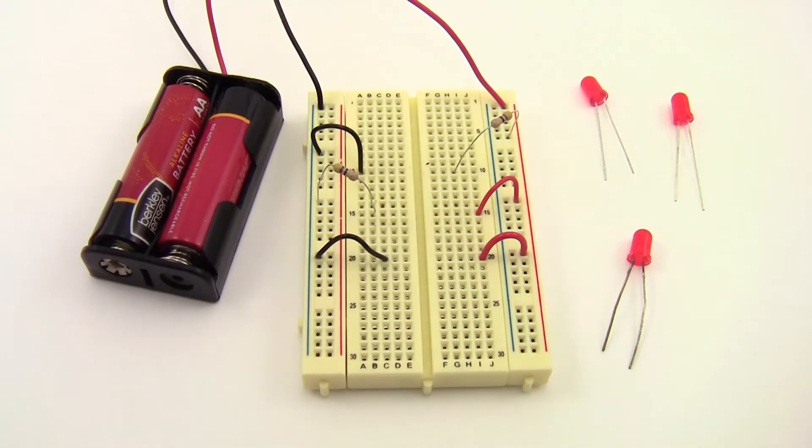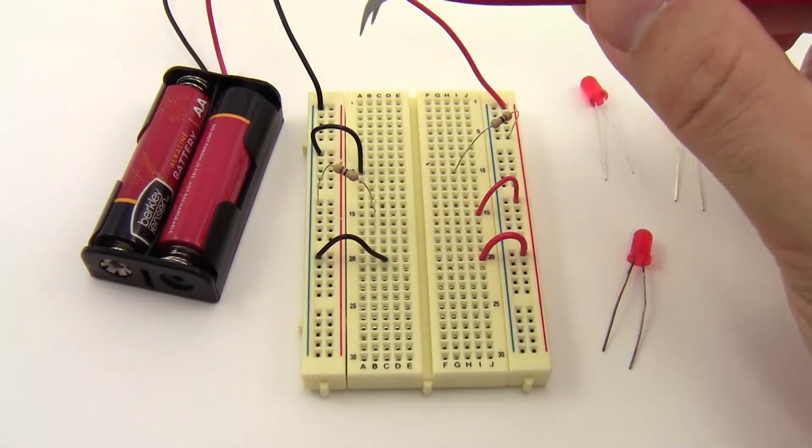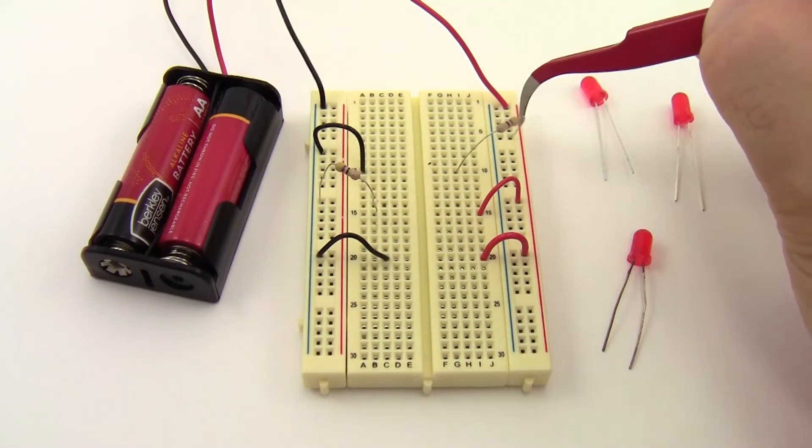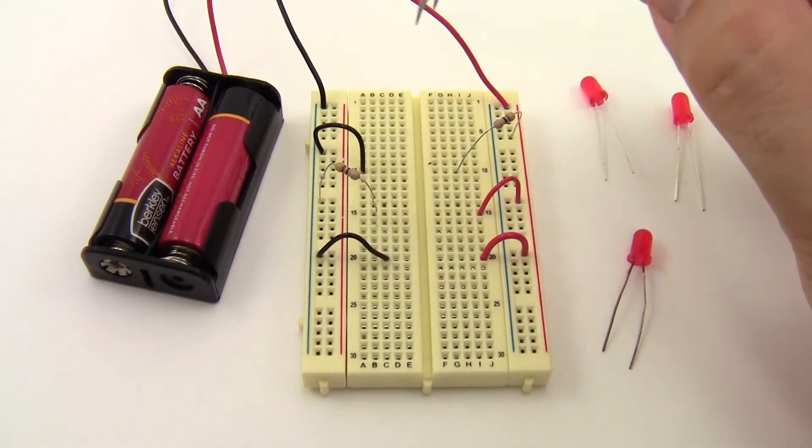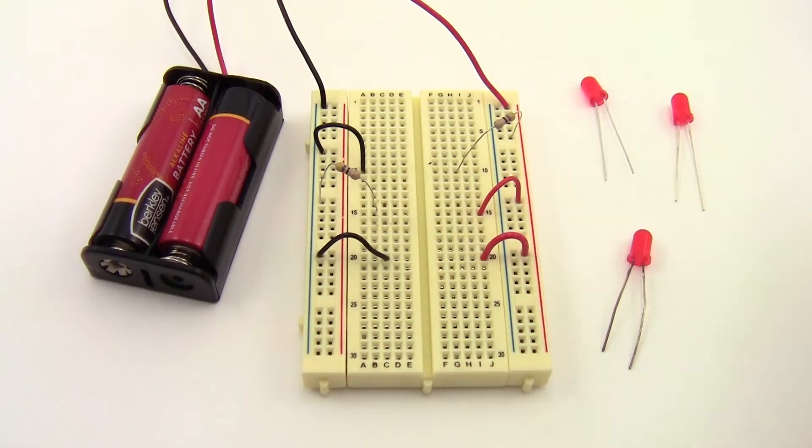We can prove this pretty quickly just by demonstrating it on breadboard. So here I have a 2xAA battery pack providing about 3 volts wired to a breadboard on the positive side and the negative side, and I have 3 circuits set up, but none of these circuits are closed yet because I haven't put an LED in the middle.